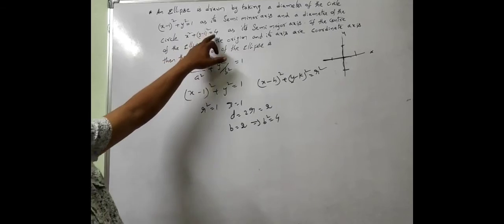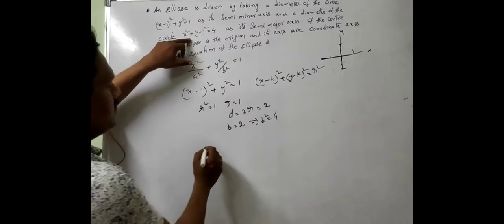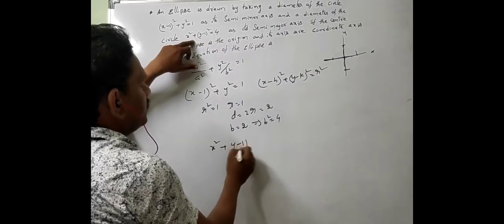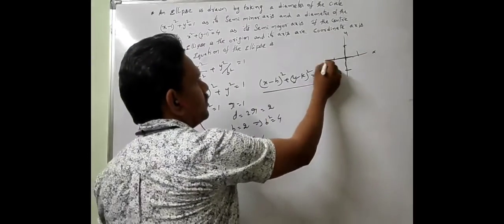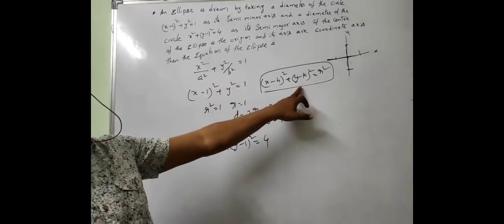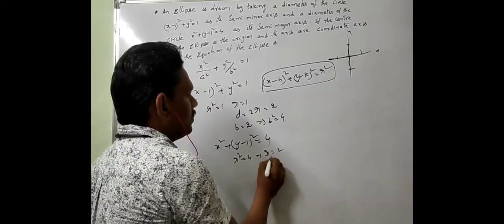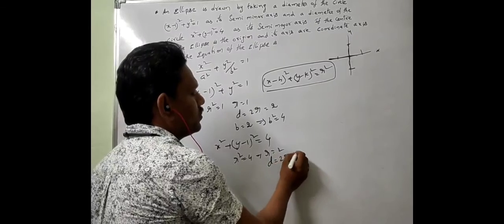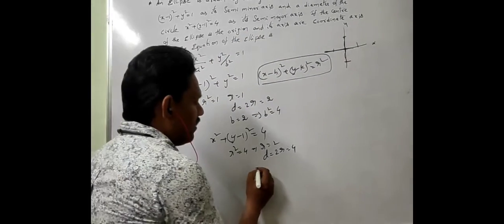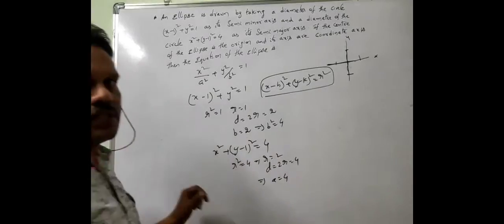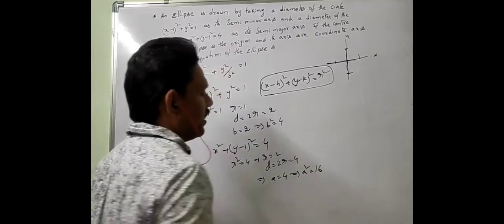Another circle is given whose diameter is the semi-major axis. The second circle is x square plus y minus 1 whole square is equal to 4. This is also in the form x minus h whole square plus y minus k whole square is equal to r square. Here r square is 4, that implies r is equal to 2. So diameter equals 2r, that is 2 into 2 equals 4. The diameter 4 is given as the semi-major axis, so the value of small a is equal to 4. From this, a square is equal to 16.